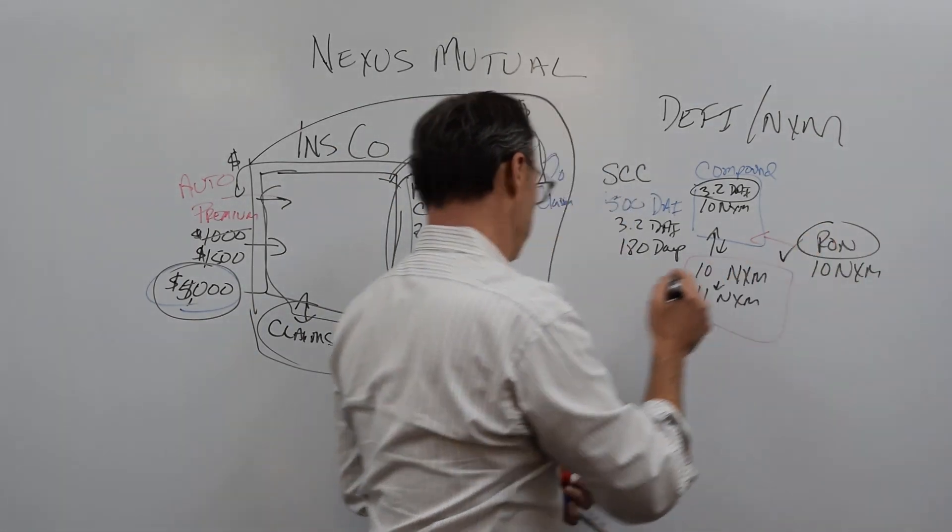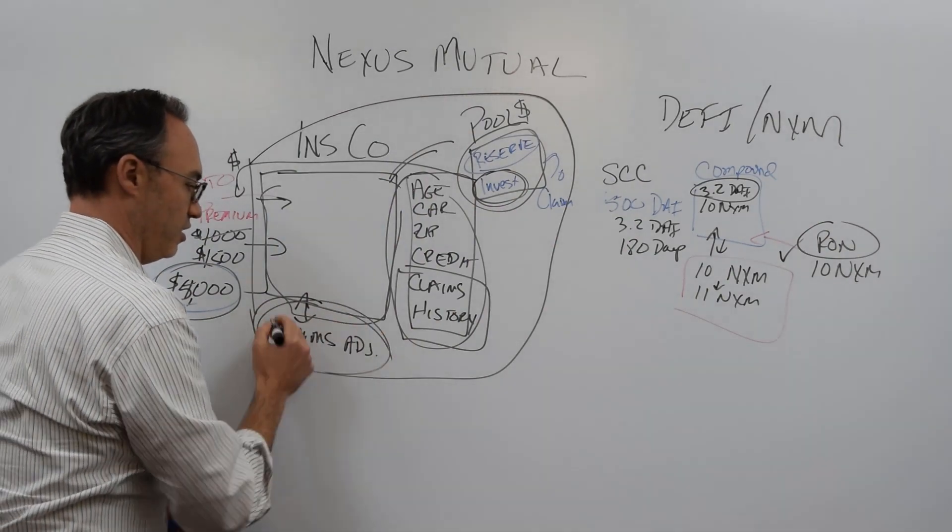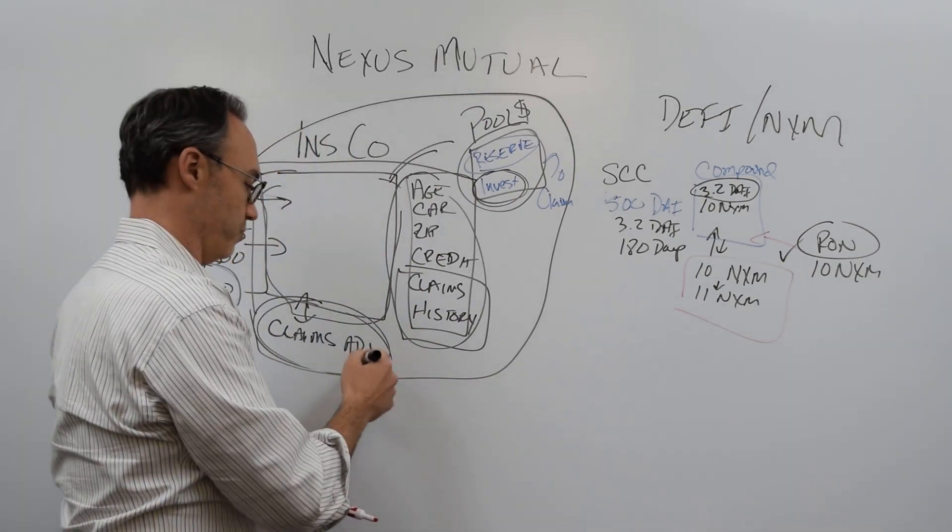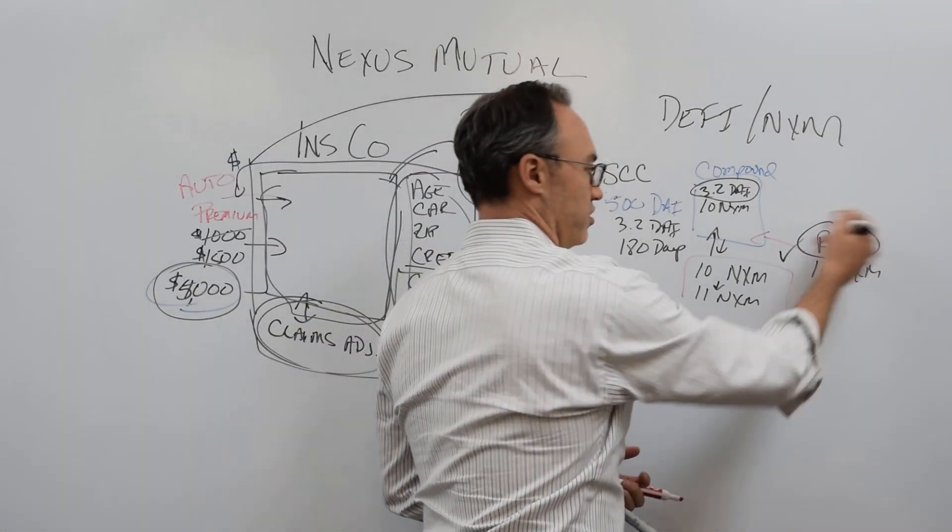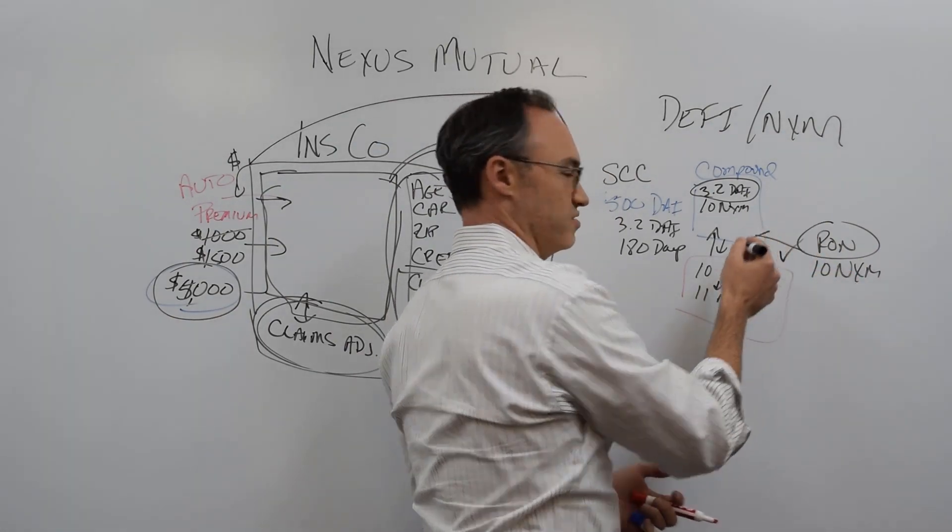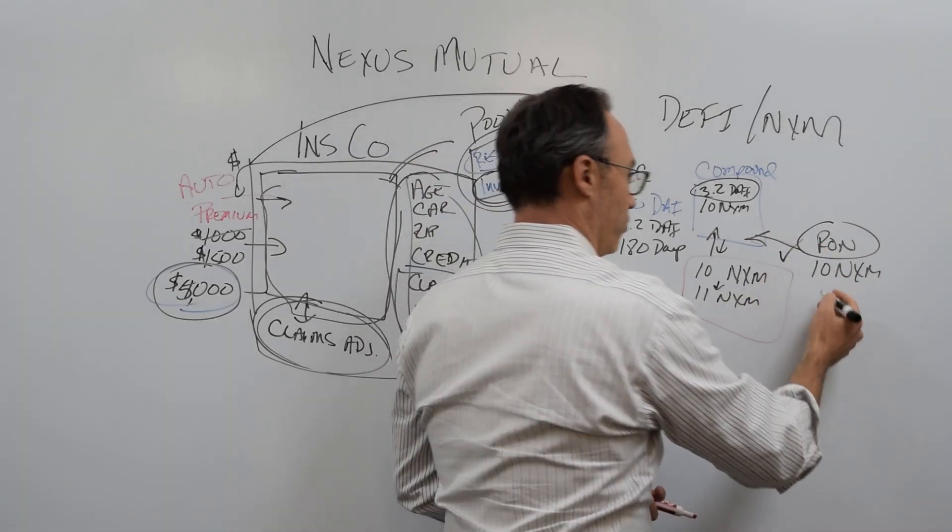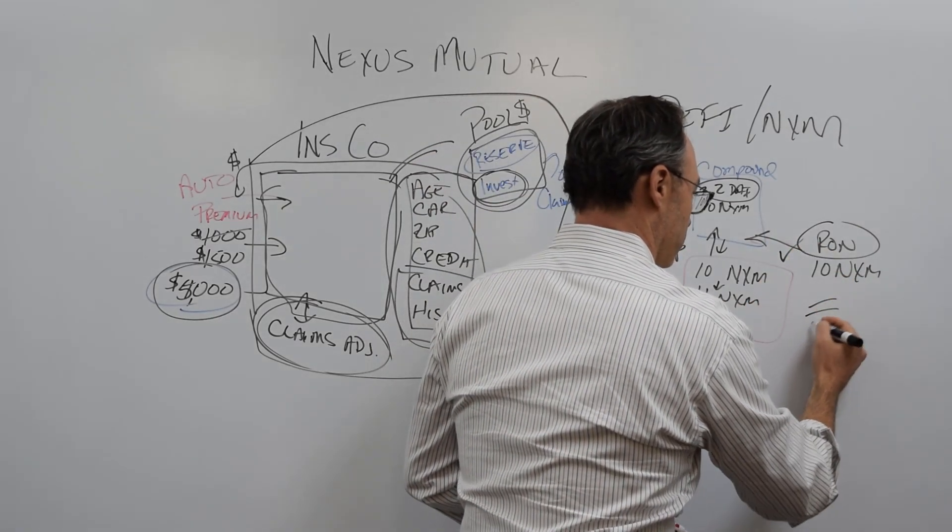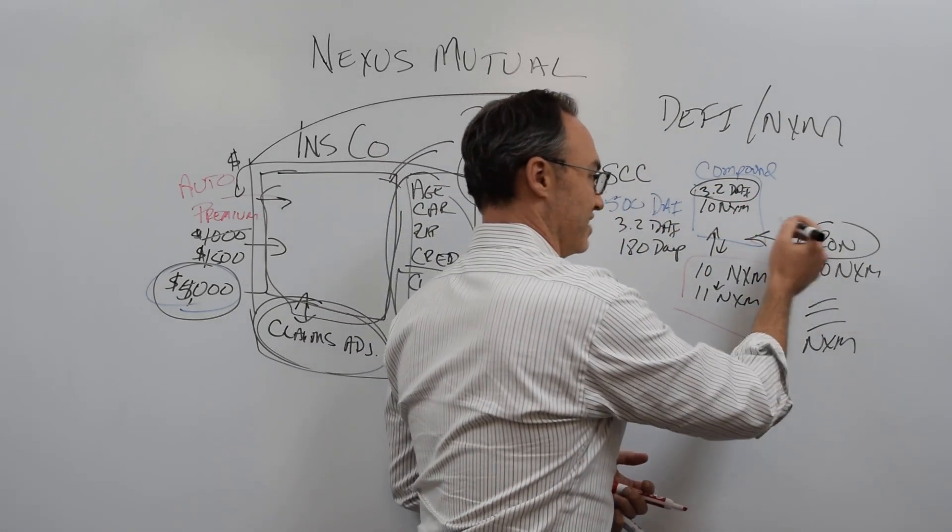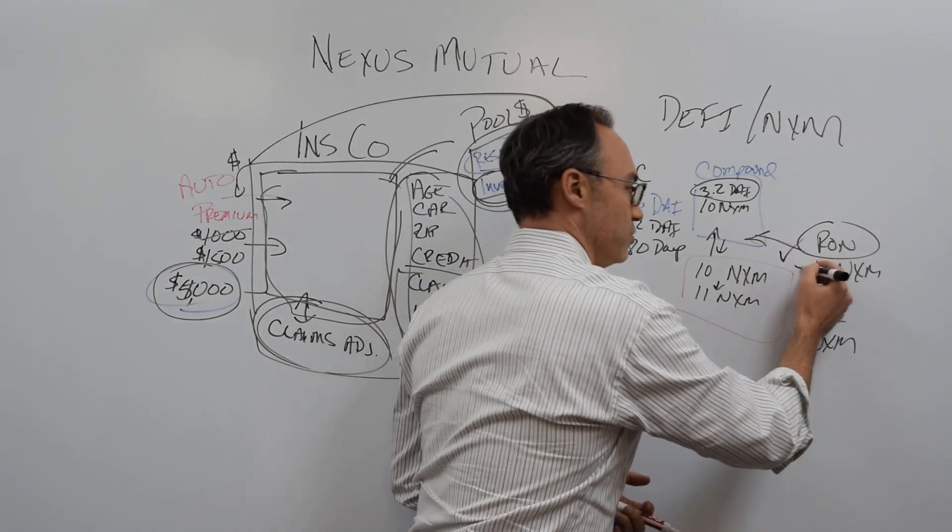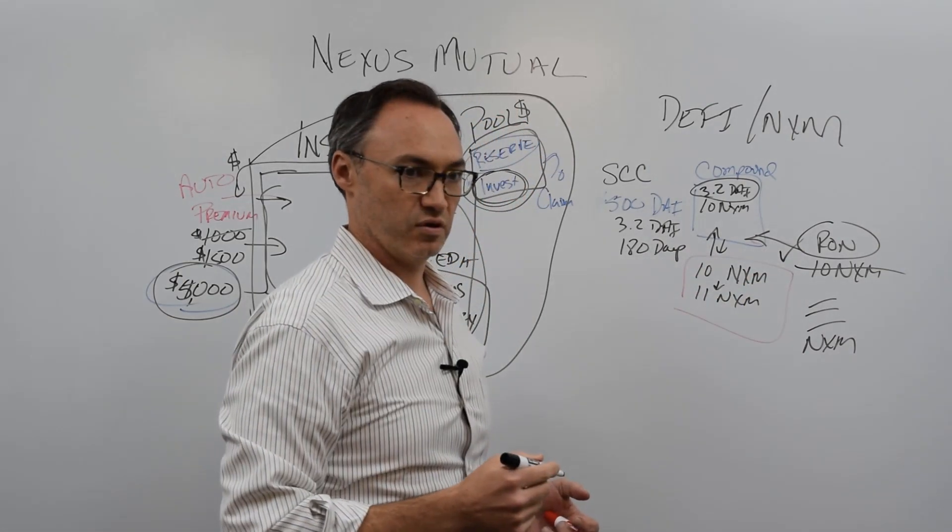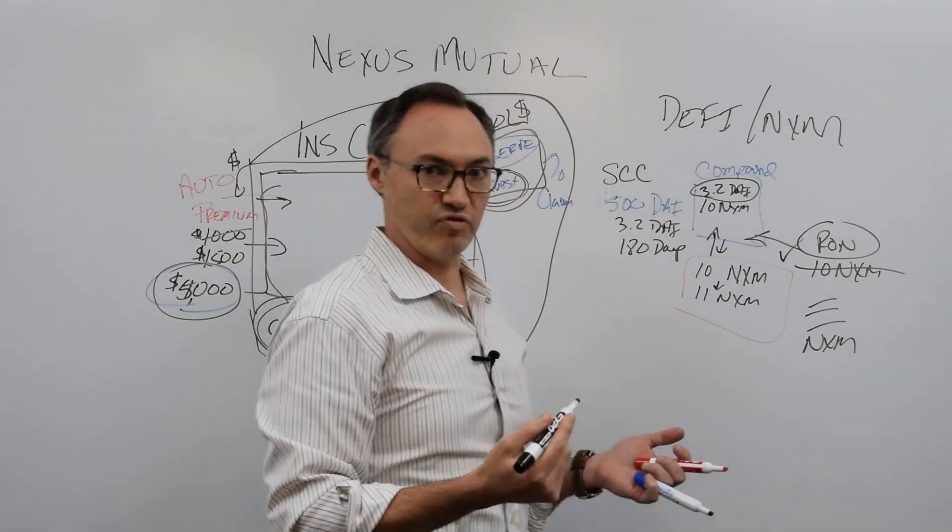So this is another independent third party. Where over here you had claims adjusters that might work for the insurance company or work separately for a separate contractor, here is a totally independent person that is incented to do the right thing. Because if Ron says, yes, this is a valid claim and there's a vote on it, by the way, there's everyone else here who has Nexus Mutual tokens and is assessing this claim as voting. And if the vote is against Ron, if it's 70-30 against him, he loses his tokens. So he does not have the incentive to validate this claim for me if it's not truthful.